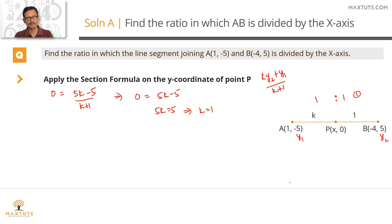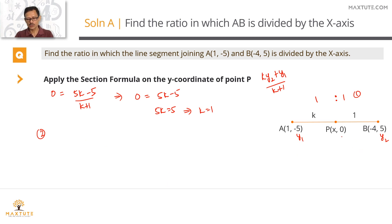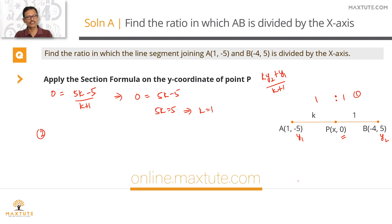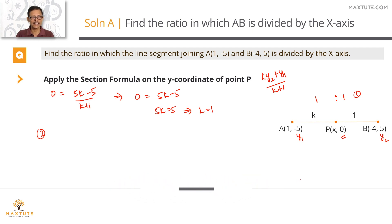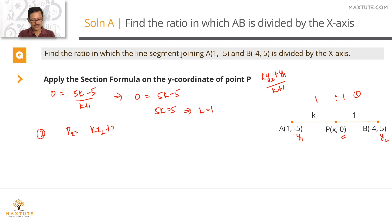Part one of the question is done. For part two, we need to find the coordinates of the point where the x-axis cuts this line. The y-coordinate is already known to us as zero, so all that is left is finding the x-coordinate of point P. We'll apply the section formula to the x-coordinate, using k = 1.